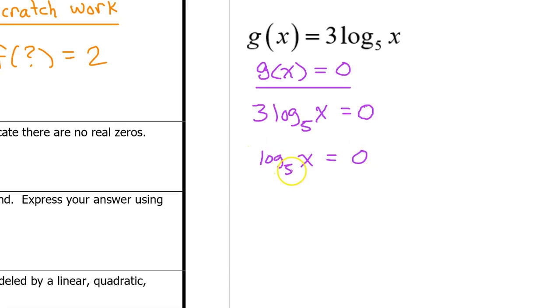We can cancel out the log base 5 by dropping a base 5 on both sides of this equation. Base 5 and log base 5 cancel each other out, leaving behind x equals 5 to the 0 power is 1. So we get the same answer if we do it by hand.